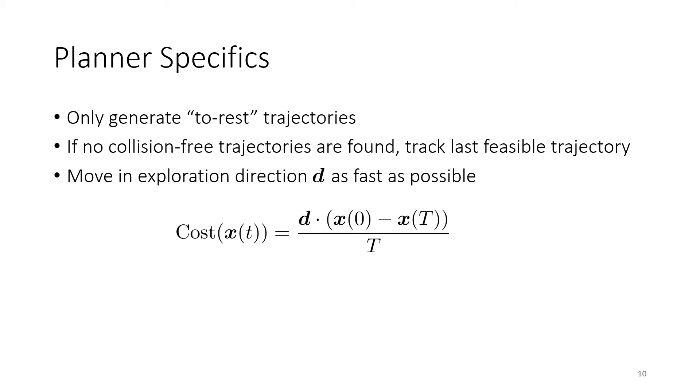The idea here is that if in a given depth image we cannot find any collision-free trajectories, then we can continue to track a previously found collision-free trajectory until it brings our vehicle to rest in a location that will not collide with obstacles. We're going to evaluate each candidate trajectory using the cost function you see below.